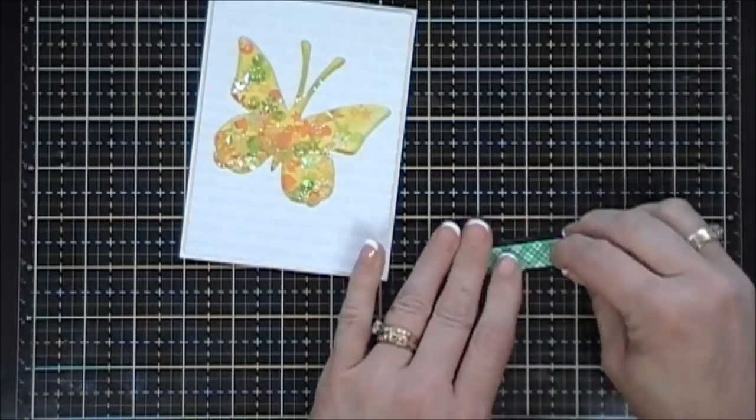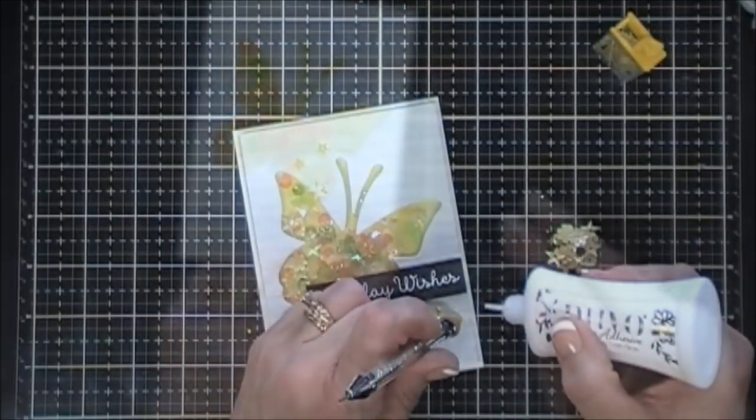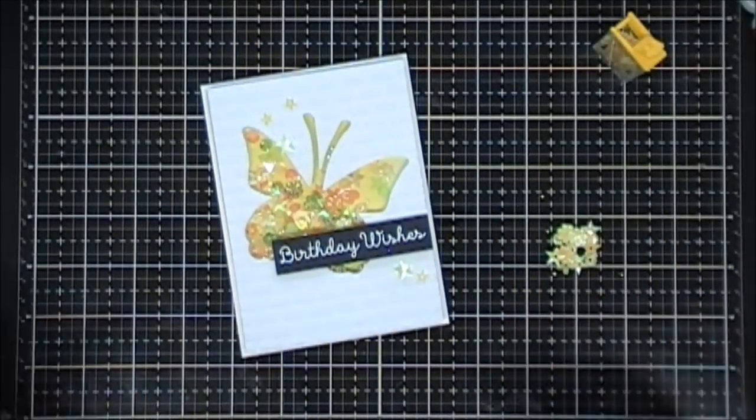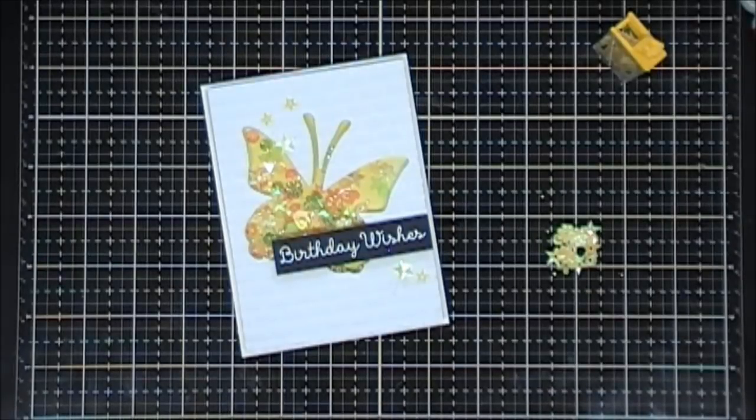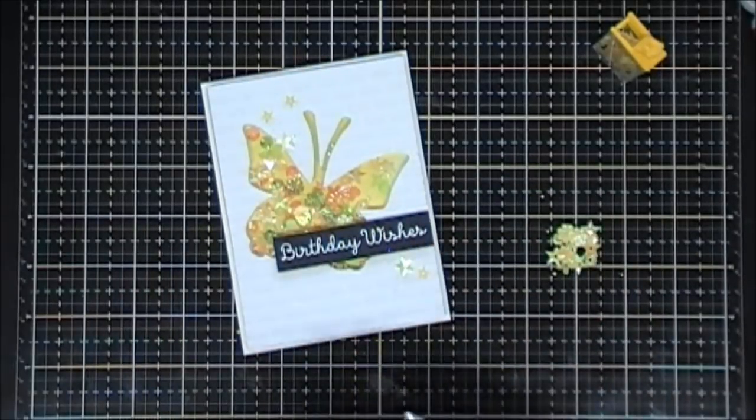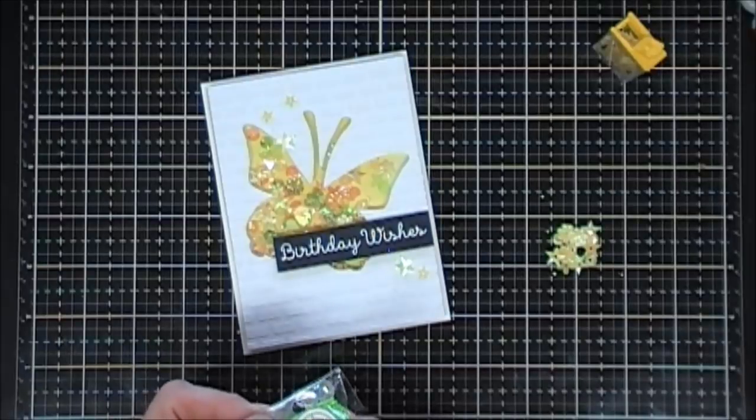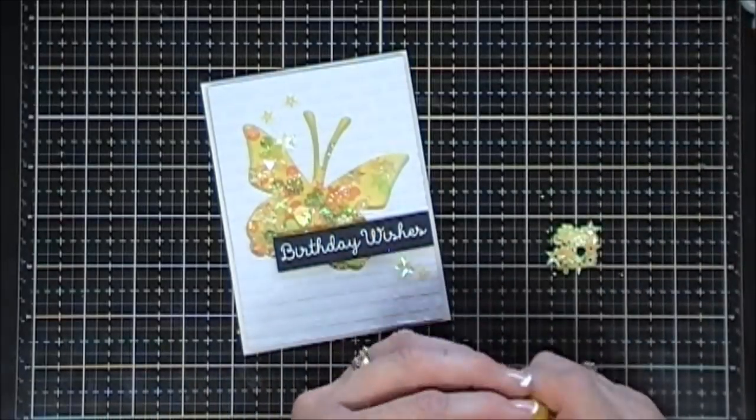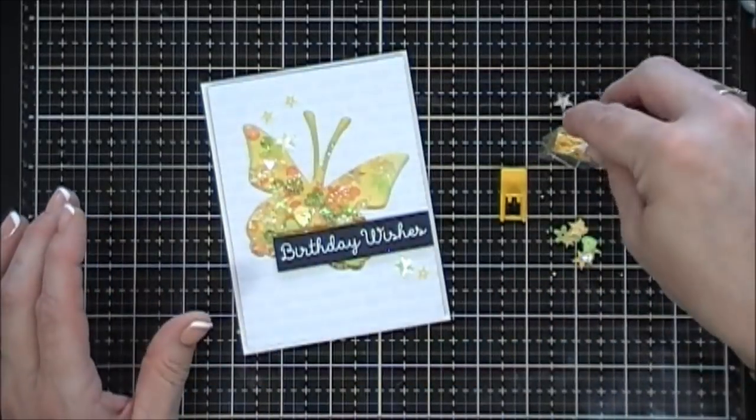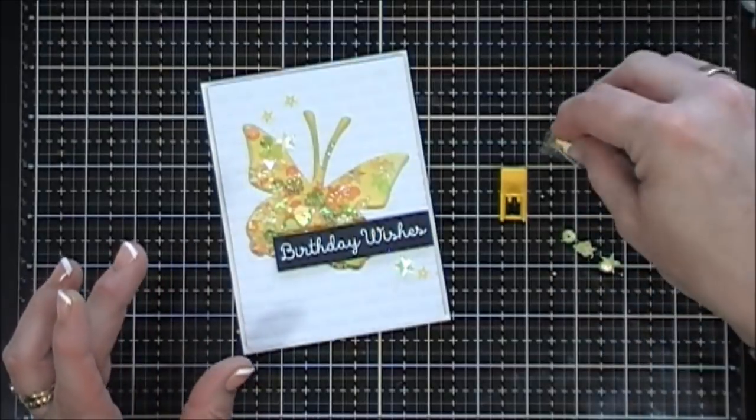These are pretty easy cards, but I think the outcomes are just so pretty. It looks like you spent a lot of time on them. For bells and whistles, I decided to add a few of the star sequins in the yellow color, and then that finishes off my first project. I think that the colors are really bright and vibrant and fun.